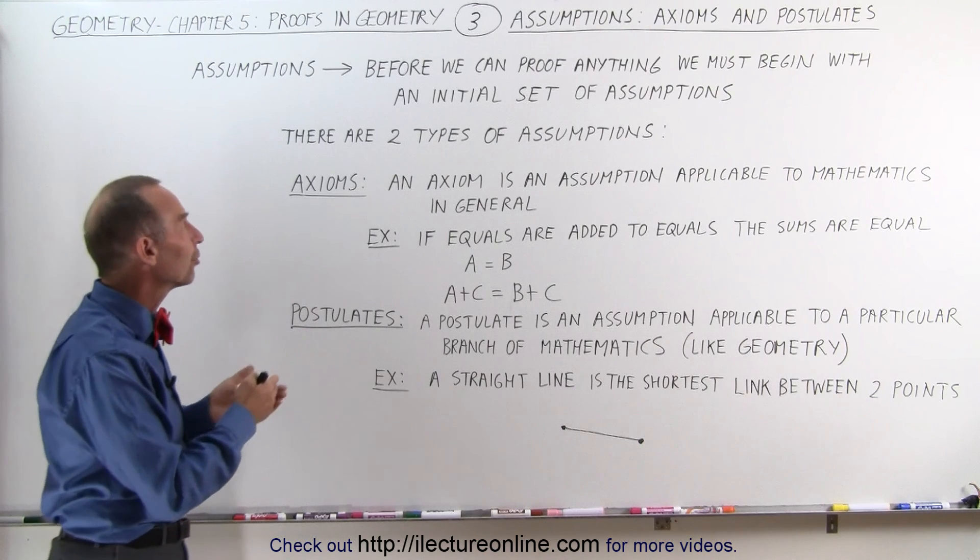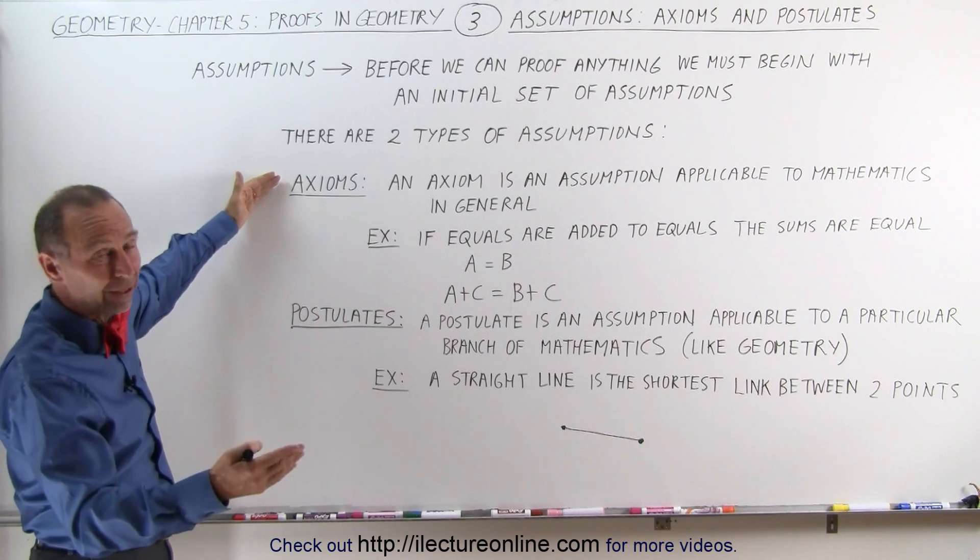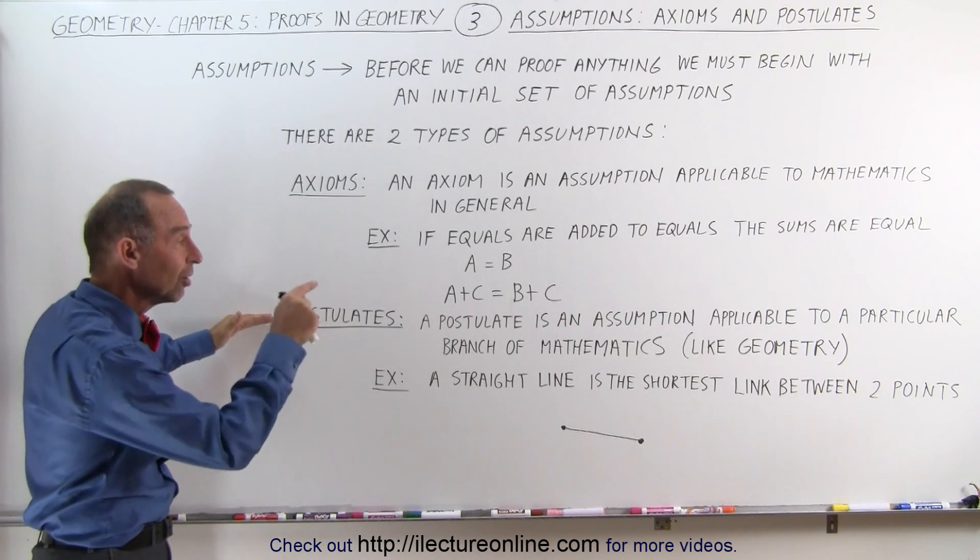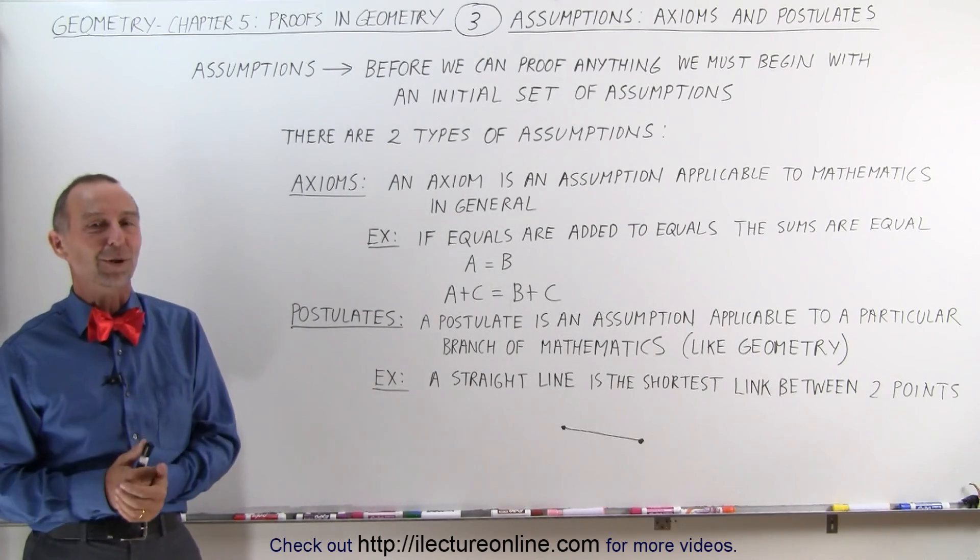So these are examples of what we call assumptions. Axioms for mathematics in general, postulates for a particular branch of mathematics, and in this case, specifically to geometry. That's how it works.